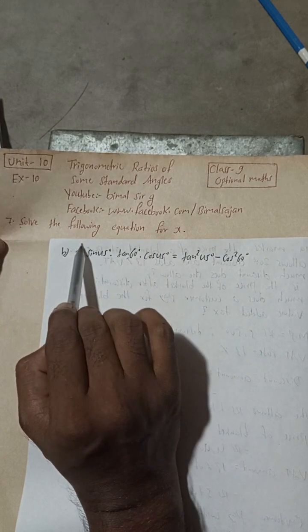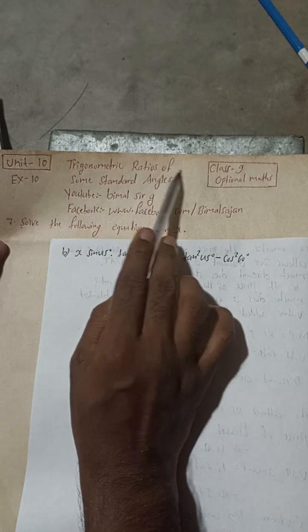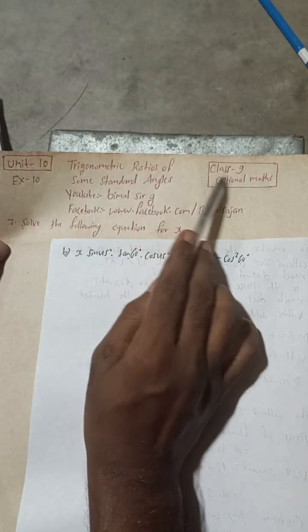welcome back to Bimal Sarji youtube channel. This is question number 7b, exercise 10, unit 10, trigonometric ratios of some standard angles, class 9 optional maths.